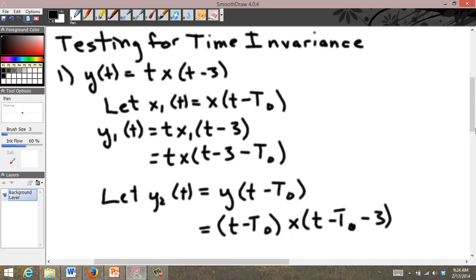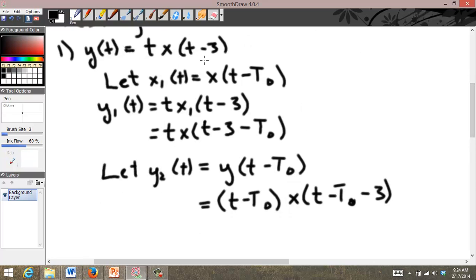This says everywhere that I have a t up here, I replace it with t minus t0. So that's going to equal t minus t0, x of t minus t0, minus 3. So the point here is that because of the t out front, we have a t minus t0 out front when we delay the output, whereas we just have a t here. But also notice that here we have t minus 3 minus t0, and here we have t minus t0 minus 3.